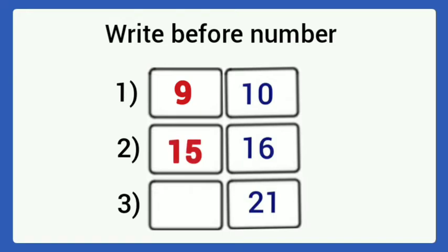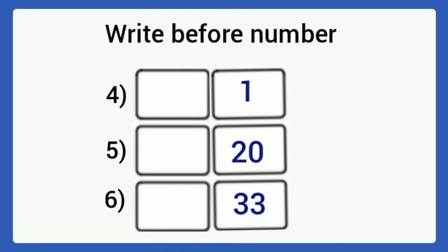Then, 21. Before 21, it is 20. Next one: 1. Which number comes before 1? It is 0. Next one: 20. Which number comes before 20? It is 19. Then, next one: 33. Which number comes before 33? It is 32.